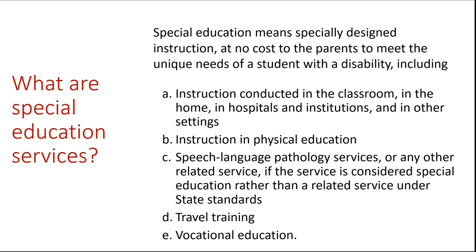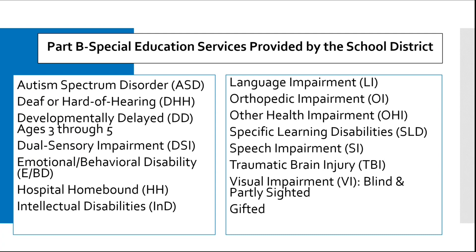We also have speech, language pathology services, or any other related service if the service is considered special education rather than a related service under state standards. We have traveling — typically for students aging 12 and older doing CBIs, which is community-based instruction — this helps teach the child how to use public transportation safely. And we have vocational education as well. For students three through 22, there are 14 categories of disabilities identified by IDEA, and we will discuss a few of these and specific strategies to address those challenges.